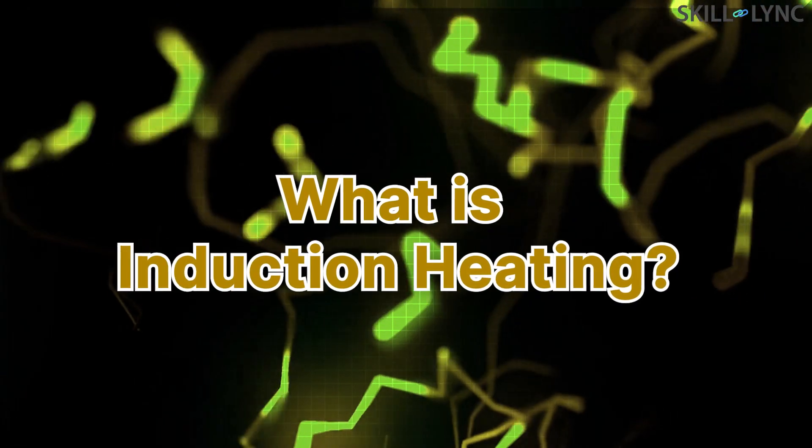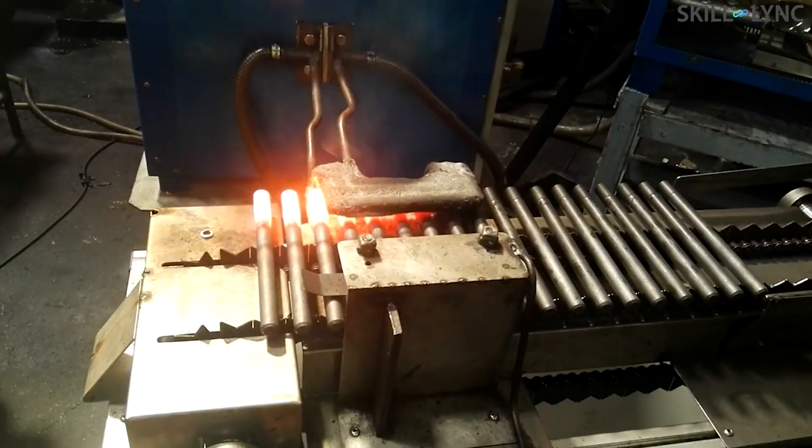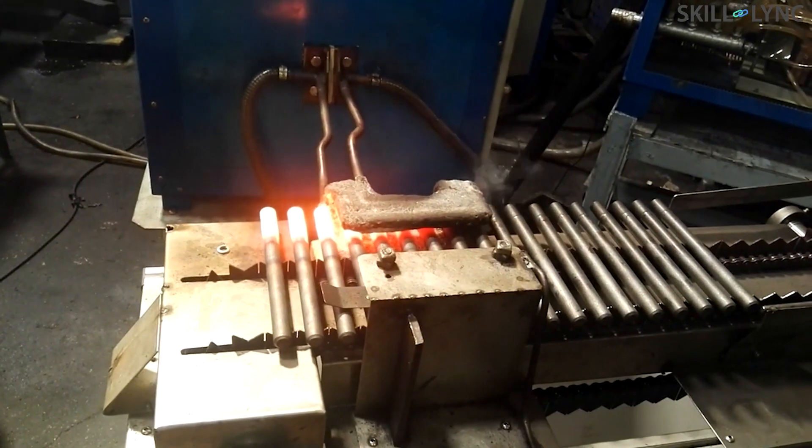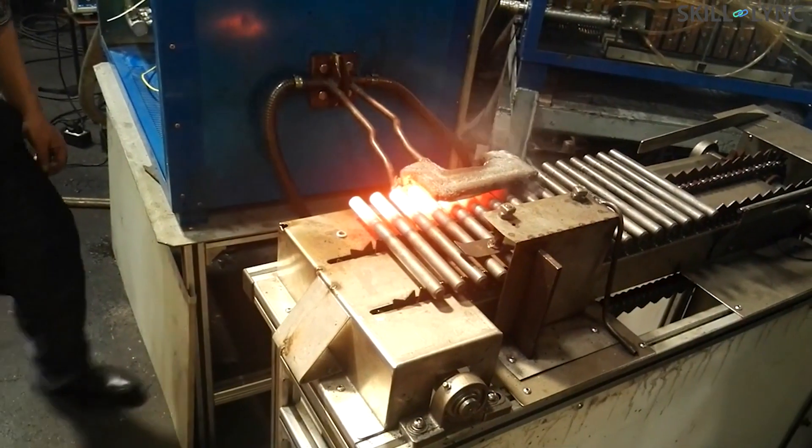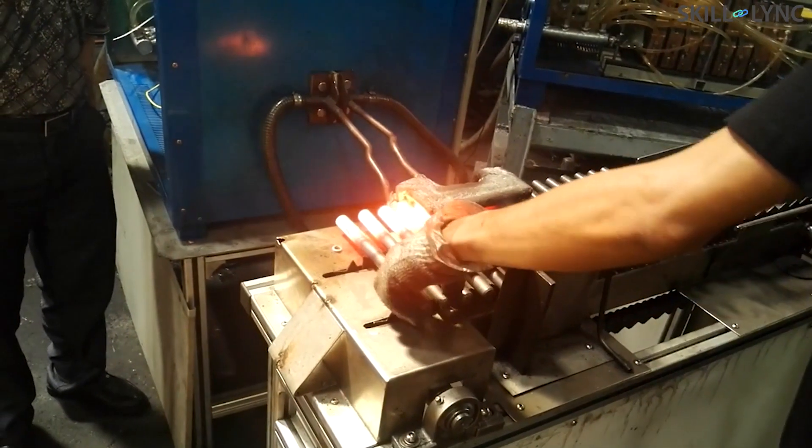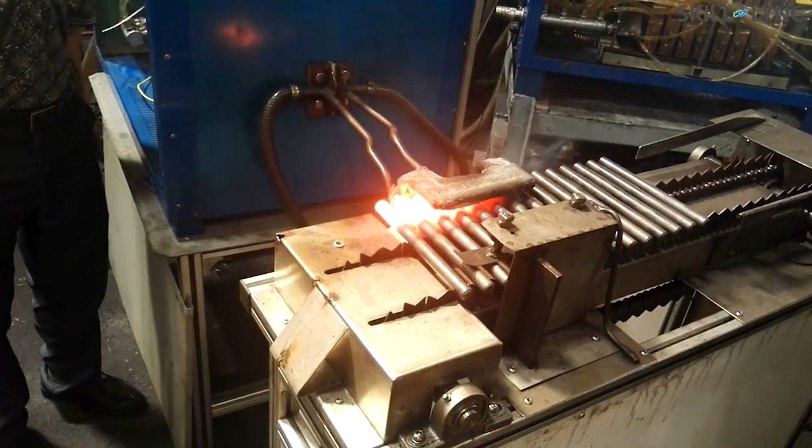Instead, in this video we'll be discussing a different procedure of heating called induction heating. Electromagnetic induction heating is a method of heating electrically conductive materials. This method is most commonly used in metalworking processes such as forging, welding, heat treating, and melting.